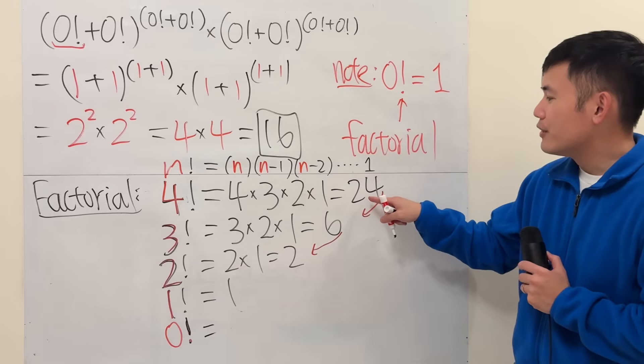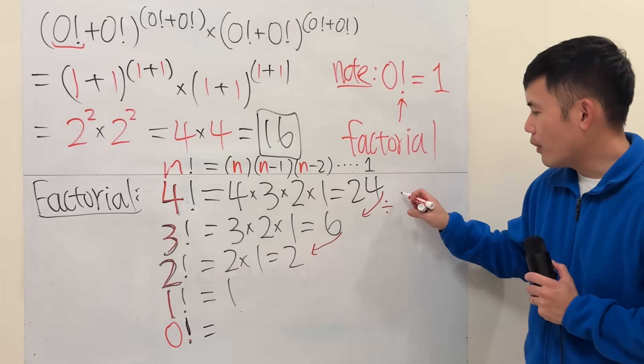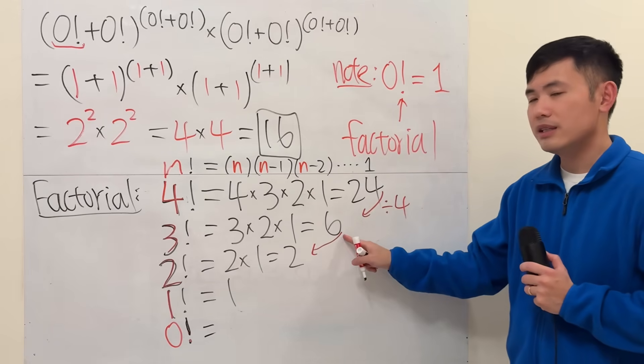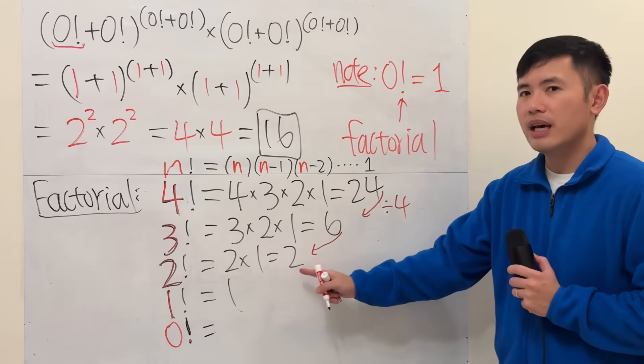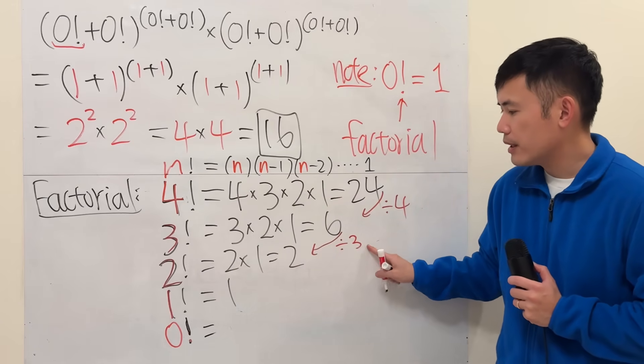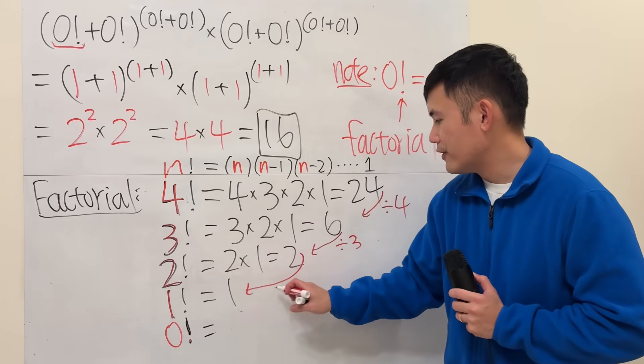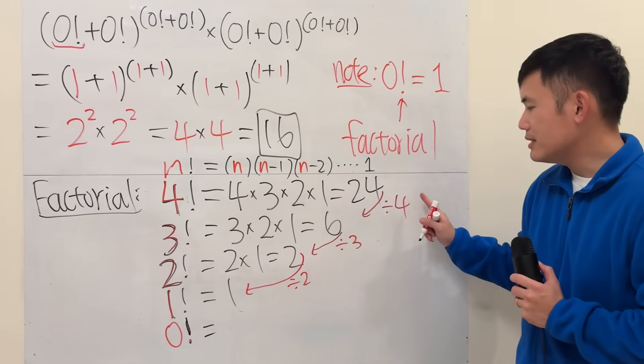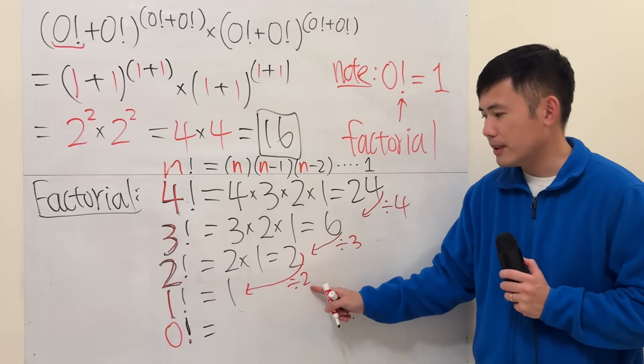I'm going to look at 24 to 6 as divided by 4. 24 divided by 4 we get 6. Well, it's not 6 divided by 4 to get 2. Instead we have 6 divided by 3 to get 2. Then if you look at 2, we divide it by 2. Notice the pattern: divided by 4, divided by 3, divided by 2.